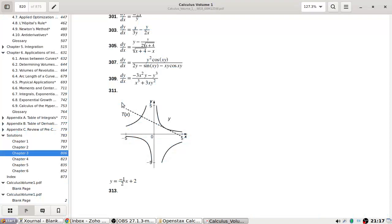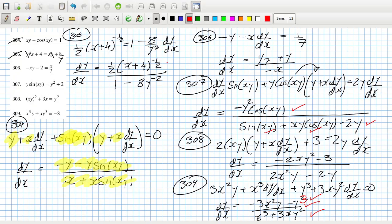305. Root x plus 4 on the denominator, yeah that's right. I could probably clean up the two. Oh no, there's the two there.